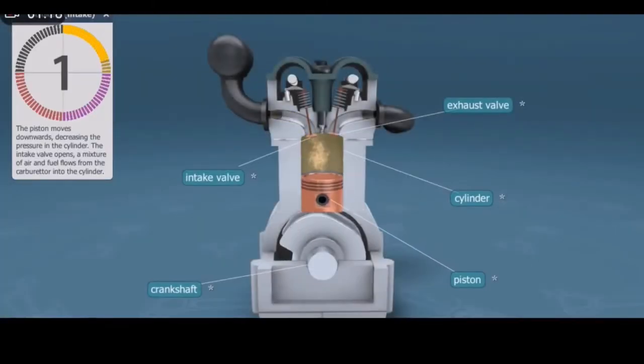The first stroke is intake. The piston moves downwards, decreasing the pressure in the cylinder. The intake valve opens and a mixture of air and fuel flows from the carburetor into the cylinder.